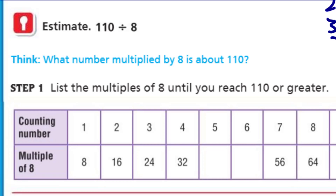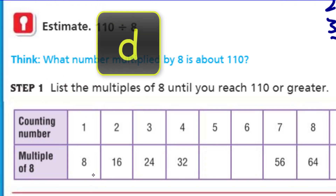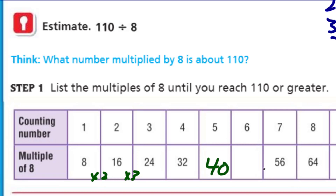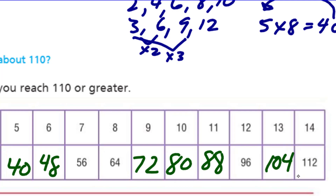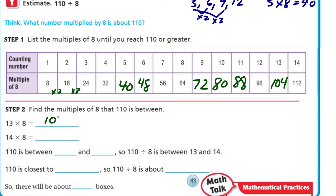List the multiples of eight until you reach 110 or greater. So I have 8, 16 — see how that's like times two — 24, 40, 48. Then we have 8 times 9 is 72, 8 times 10 is 80, 8 times 11 is 88. Now 8 times 13 is 104. If I add on eight, that's 112. So 13 times 8 is 104, and 14 times 8 is 112. It says find the multiples of 8 that 110 is between. 112 is over, 104 is less — so 110 is between 104 and 112. So 110 divided by 8 is between 13 and 14.